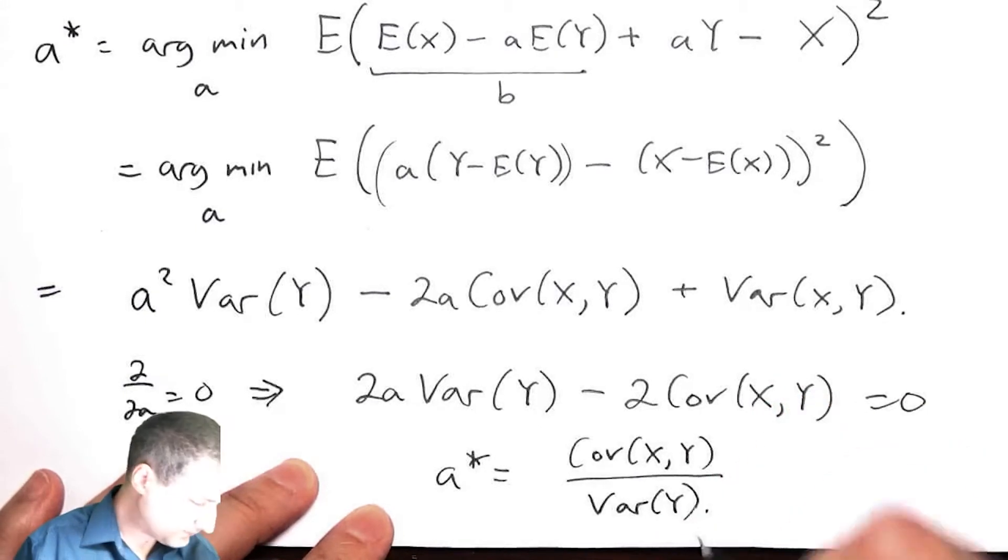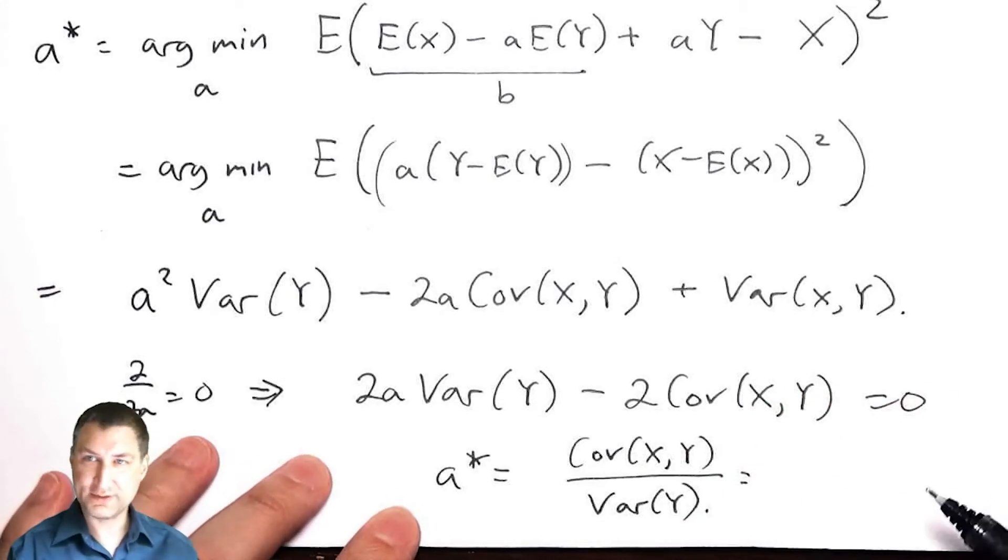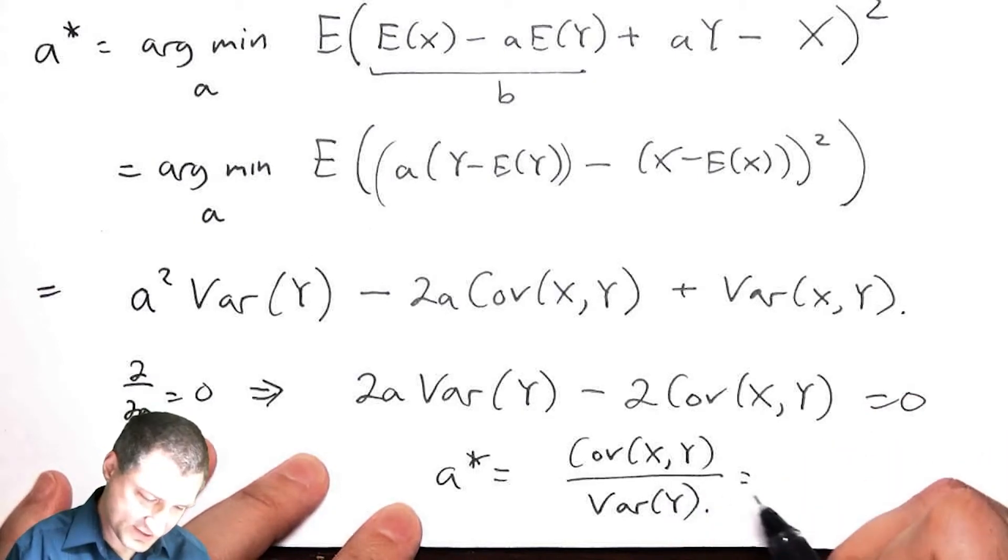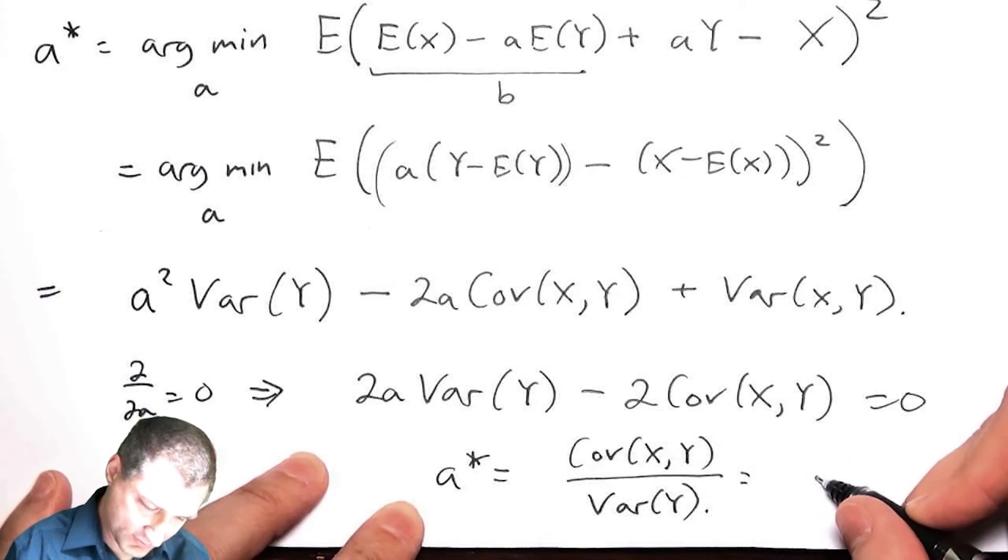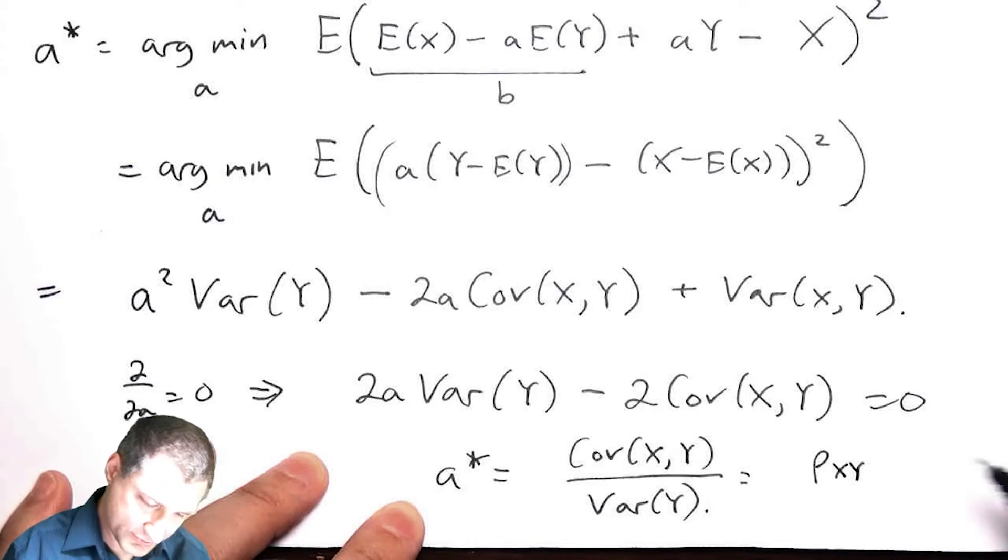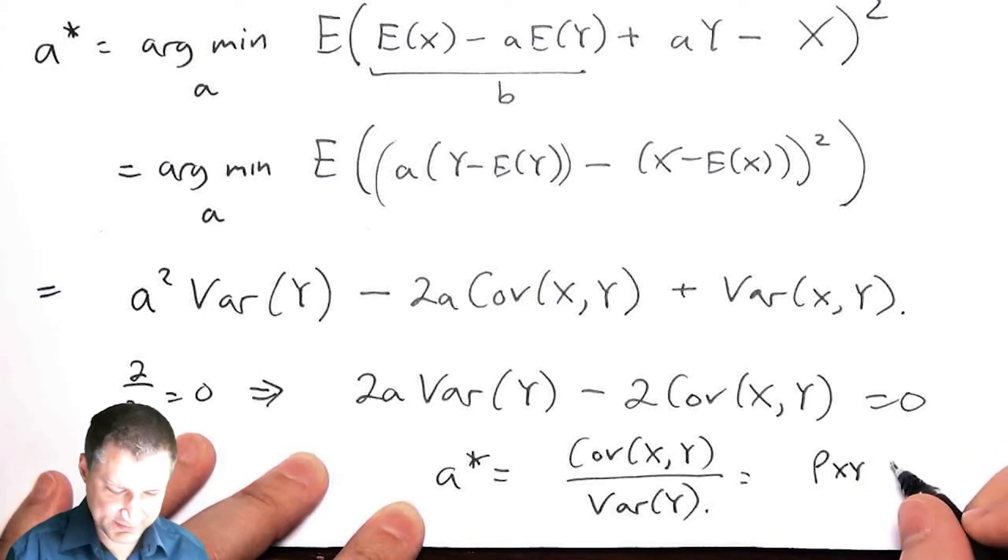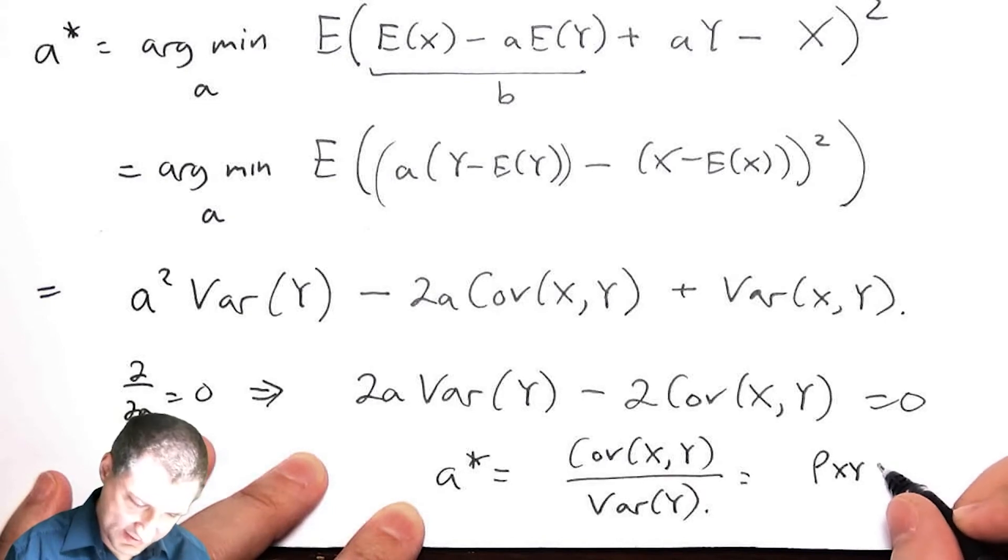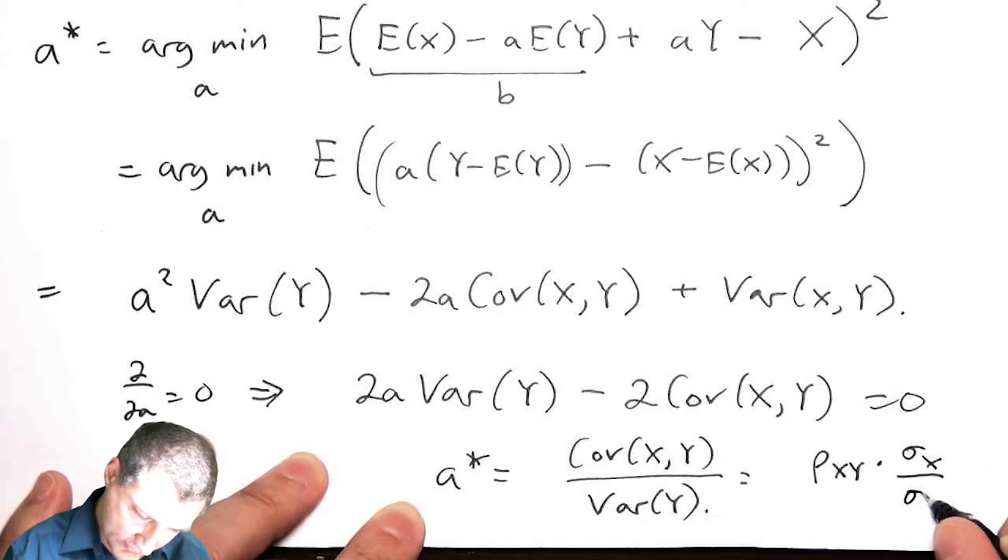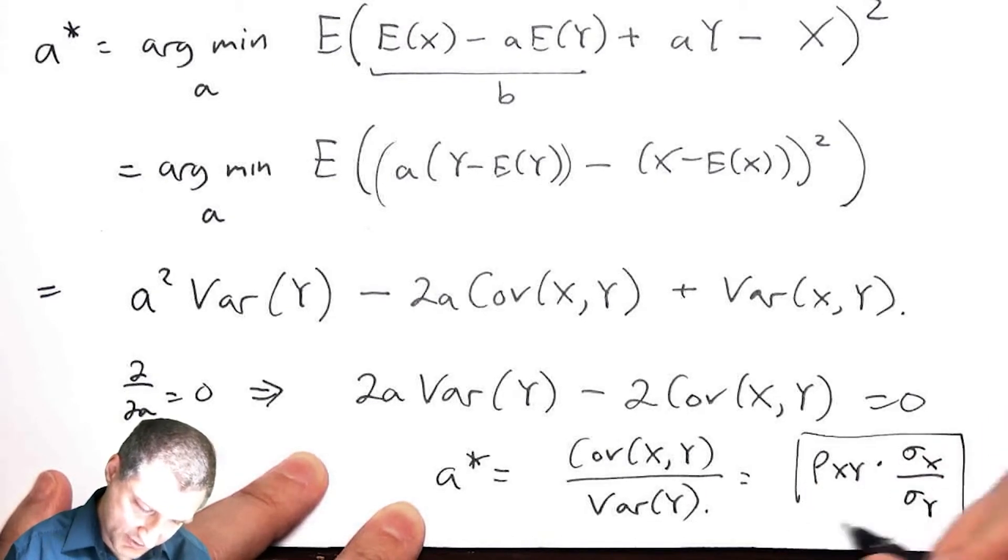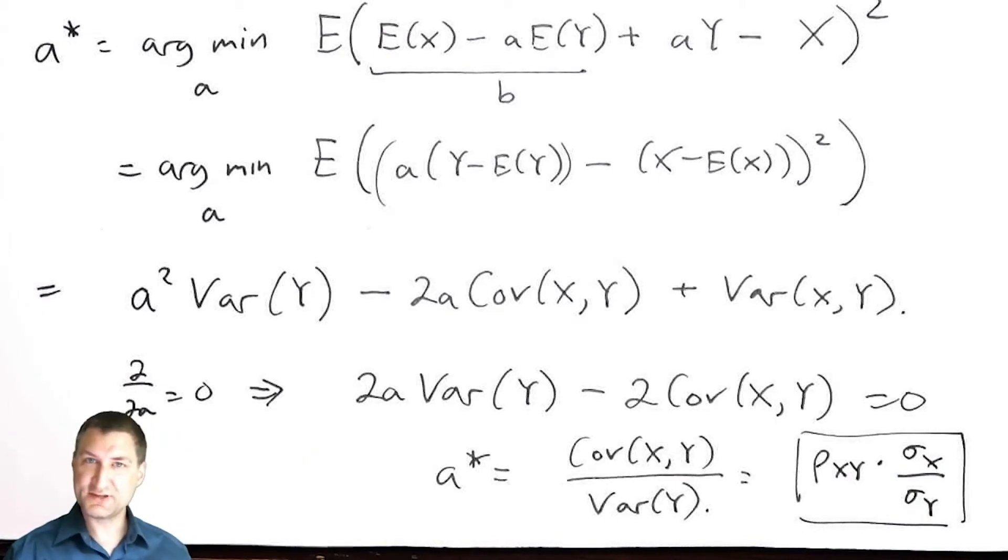Or if I write this in terms of correlation coefficient, I can rearrange things to say that the covariance of X,Y is really ρ_XY·σ_X·σ_Y. So basically I have a relationship like this. You can convince yourself that this is the case.